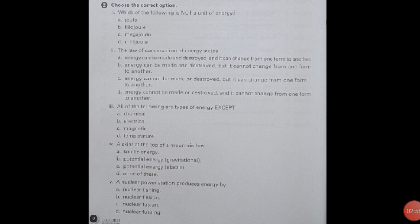Number third: All of the following are the types of energy except. Let's see which is not a type of energy. Chemical is a type of energy we studied. Electrical is also a type of energy we studied. Magnetic also. In option D, you will tick temperature.